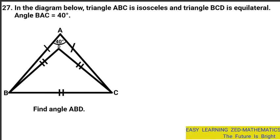Question 27: In the diagram below, triangle ABC is isosceles and triangle BCD is equilateral. Angle BAC is equal to 40 degrees. You need to look at the diagram below, which has two triangles, and take note of all the details. The question is: find angle ABD.